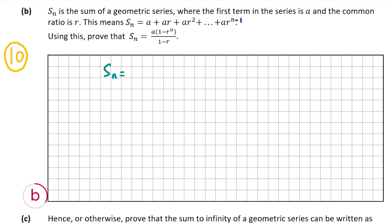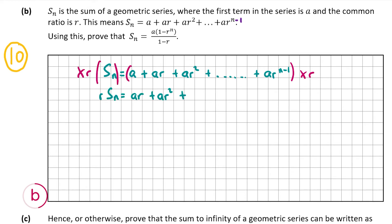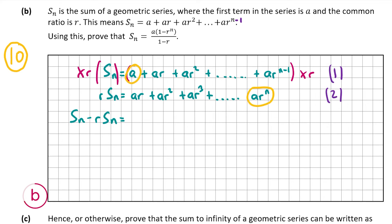S(n) equals a plus ar plus ar² plus all the way up to ar^(n-1) — call this equation 1. Now multiply everything by r on both sides: r·S(n) equals ar plus ar² plus ar³ plus all the way up to ar^n — call this equation 2. Subtracting equation 2 from equation 1 gives S(n) minus r·S(n), and everything cancels except the a at the start and the ar^n at the end.